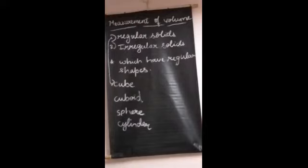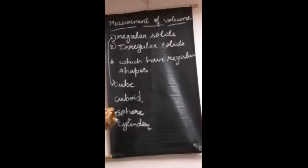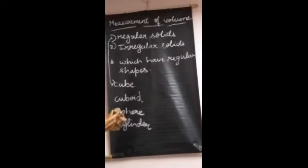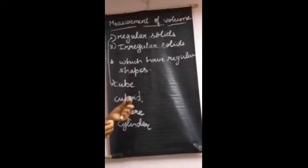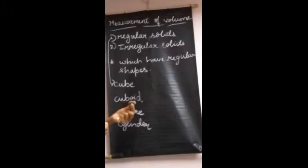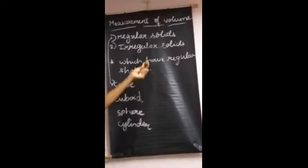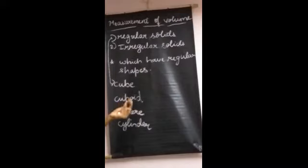Irregular solids don't have sides and faces. In my hand I have a piece of gravel — this stone is one example of an irregular solid. The volume of this irregular solid is unknown to us, so how can we measure it? It is not a cube, not a cuboid, not a sphere, not a cylinder — it is called an irregular solid.